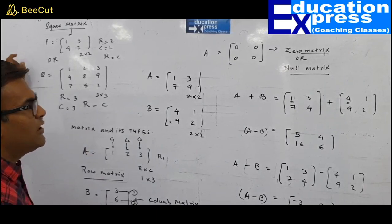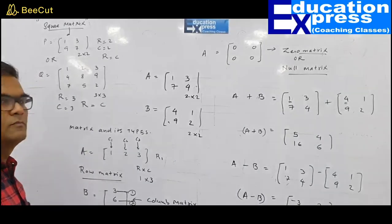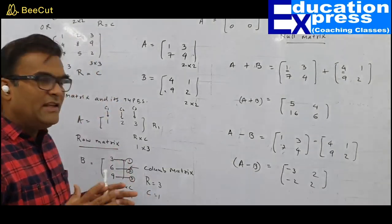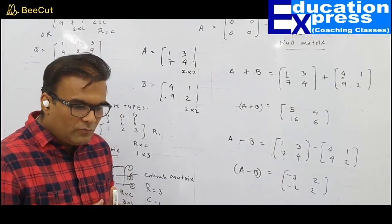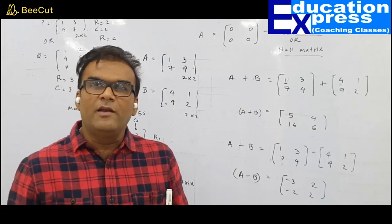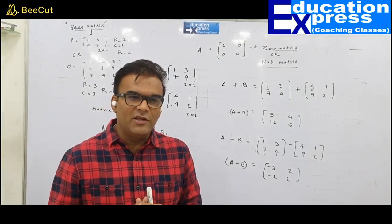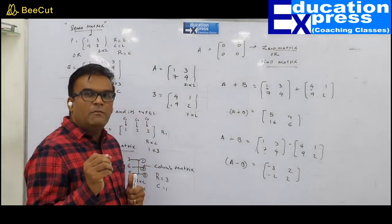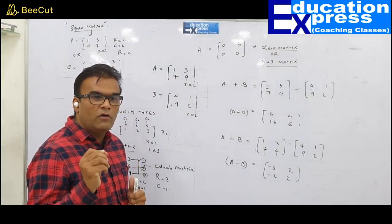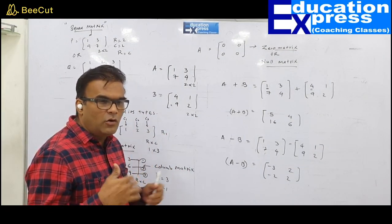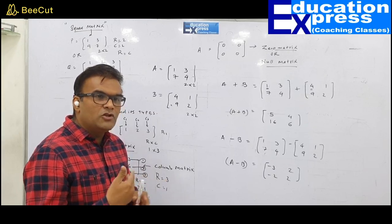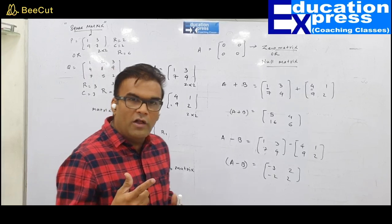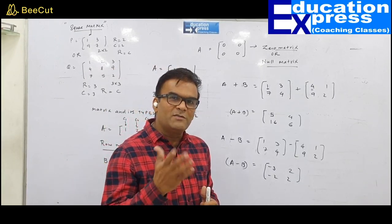Last but not least, let's recap. What is a matrix? A matrix is an arrangement of elements in rows and columns. A matrix is defined by its order, which is very important — you cannot proceed with operations on a matrix without knowing its order. Order means row × column, and rows always precede columns.